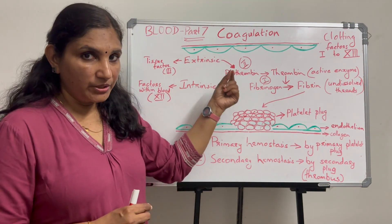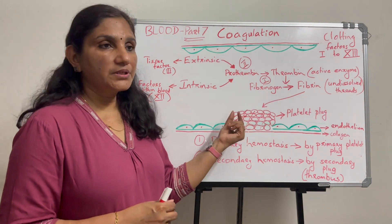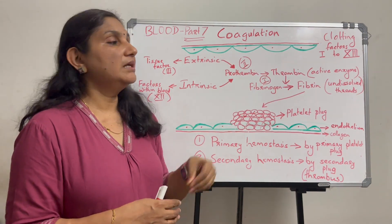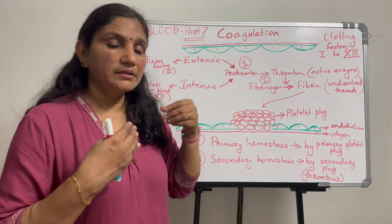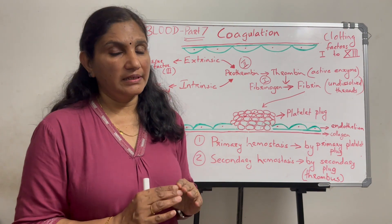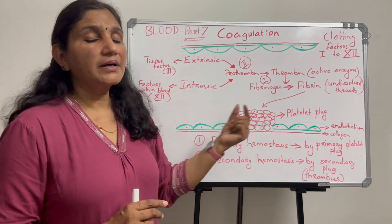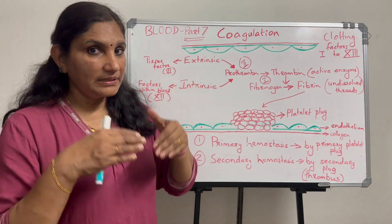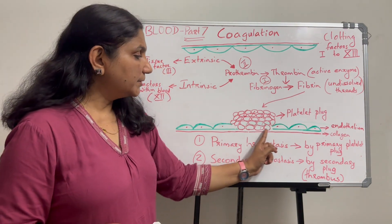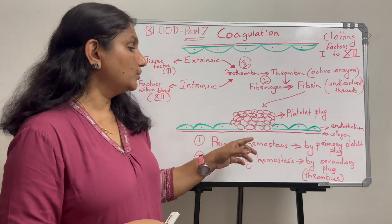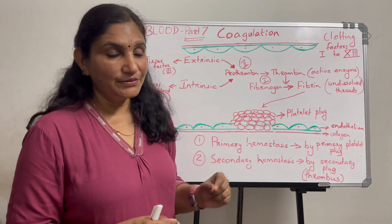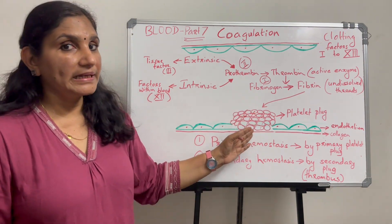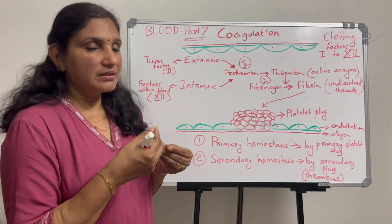When you have an injury and bleeding occurs, platelets are involved. Normally, platelet cells flow through the blood and do not come into contact with the endothelial surface. But when there is a gap in the endothelial surface — exposing collagen and connective tissues — the platelet is attracted to the non-endothelial surface. It becomes sticky.